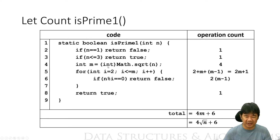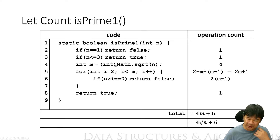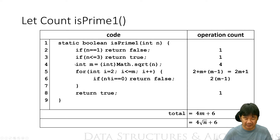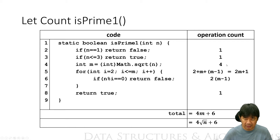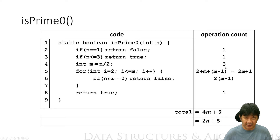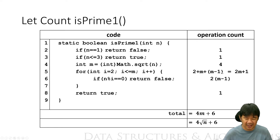Now let's count isPrime1. This one is going to be mostly the same: one, one for the first two statements. But this line changes from iterating up to n/2 to Math.sqrt(n), converted to int and stored in m, so this is four operations. The rest are the same as before, so we count all these as 2m plus 6, because this one adds one more, making it plus 6 instead of plus 5.